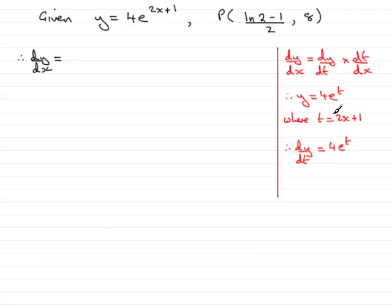And for dt by dx, if we differentiate this equation with respect to x, dt by dx will be simply 2.